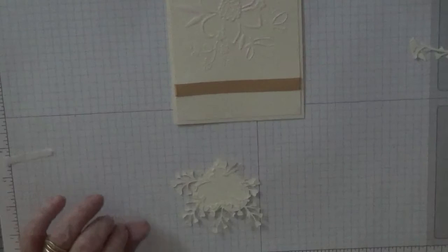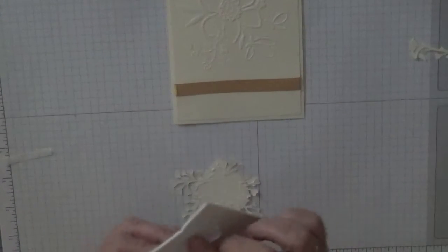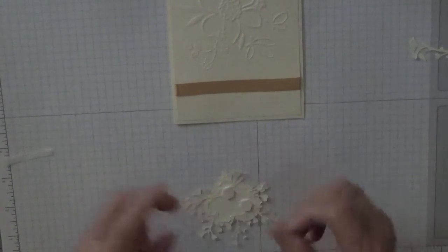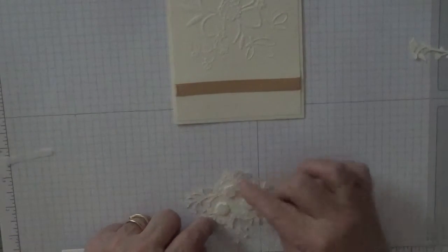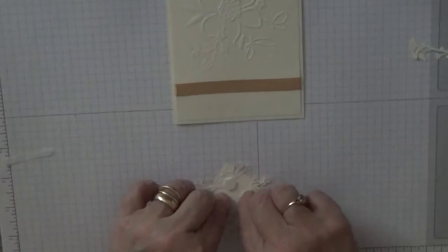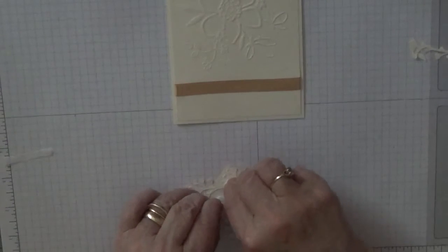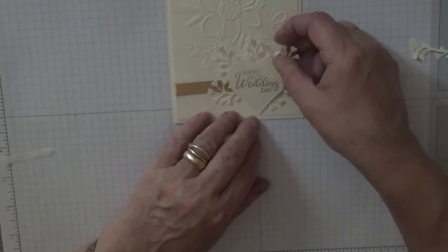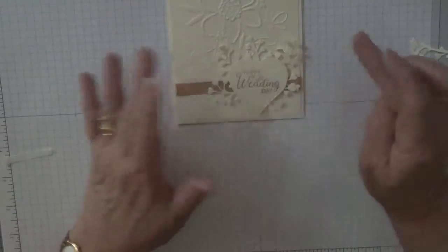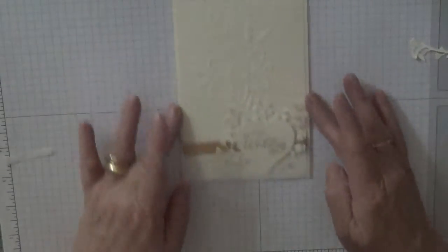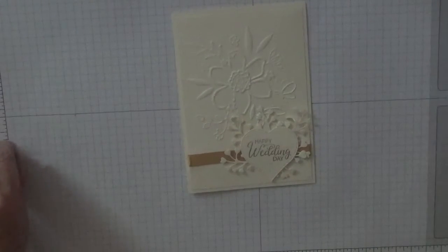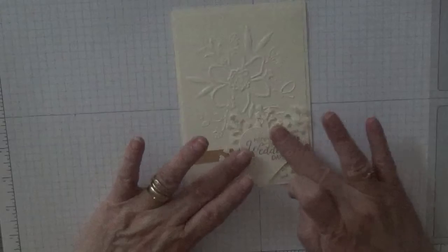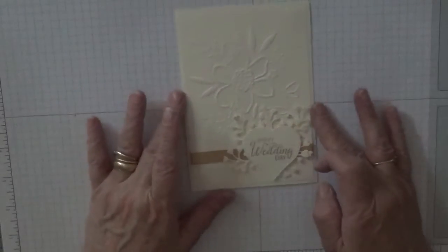And then this, where I put on with dimensionals. So one there, one there, and one there. And then pop this on there. That's a quick and easy card to do. I got the idea from Pinterest but I've just added my own little twist on it.